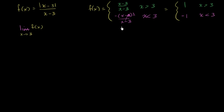I encourage you, if you don't believe what I just said, try it out with some numbers — try 3.1, 3.001, 3.5, 4, 7, any number greater than 3, and you're going to get 1. And try values for x less than 3 — you're going to get negative 1, no matter what you try.